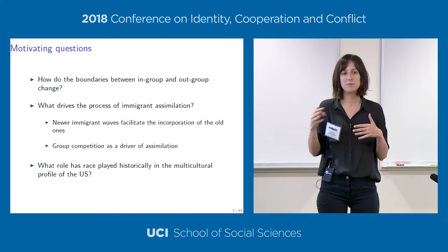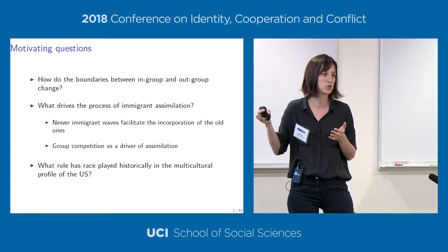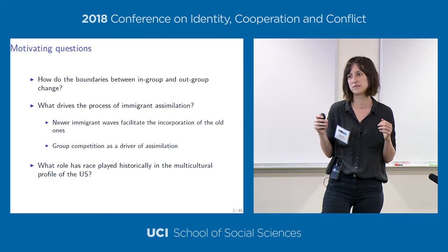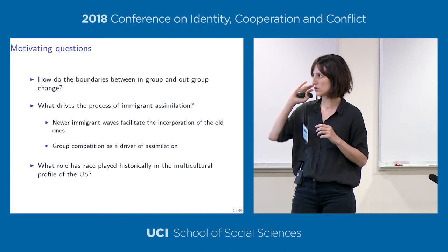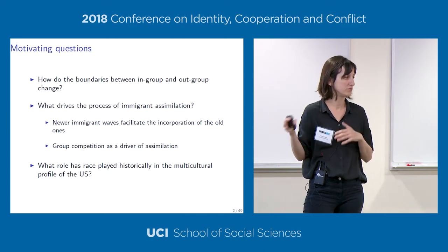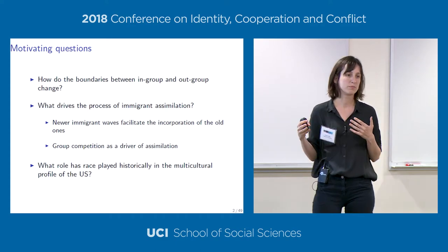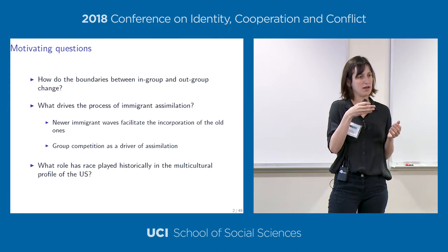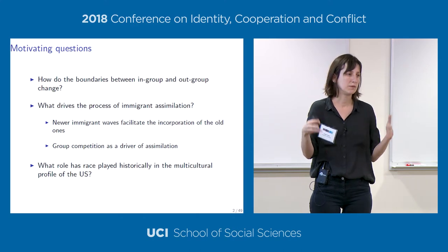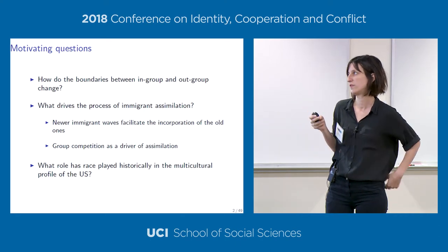We're interested in immigration and immigrant assimilation specifically—understanding how immigrants come to become part of a majority group. This has been studied from different angles by sociologists and economists. A lot of work in economics has focused on measuring assimilation or looking at the effects of specific policies on assimilation. What we're interested in here is more of a sociological process of group interaction—how a new immigrant group appearing leads older immigrant groups to assimilate through a variety of mechanisms.